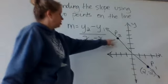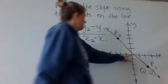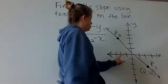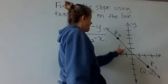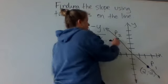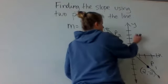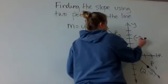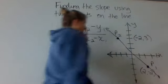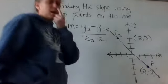Point two — its coordinates — it's to the left two and up three. So this one is at negative two, positive three.